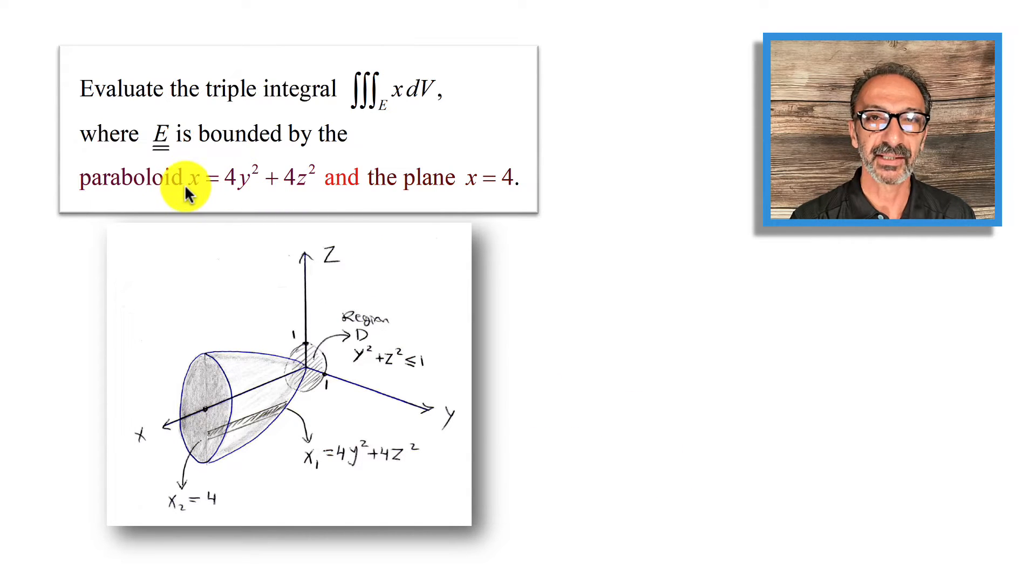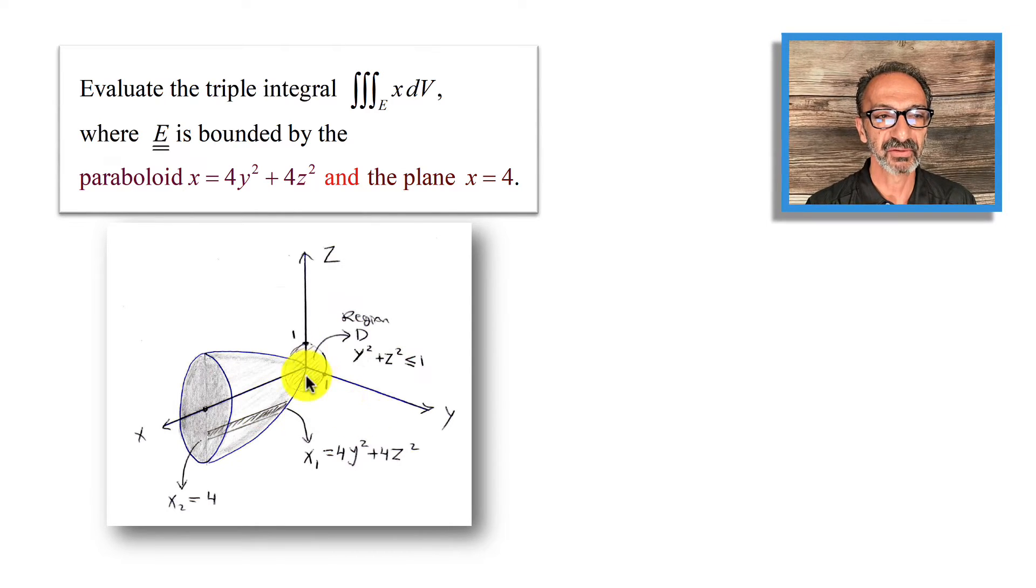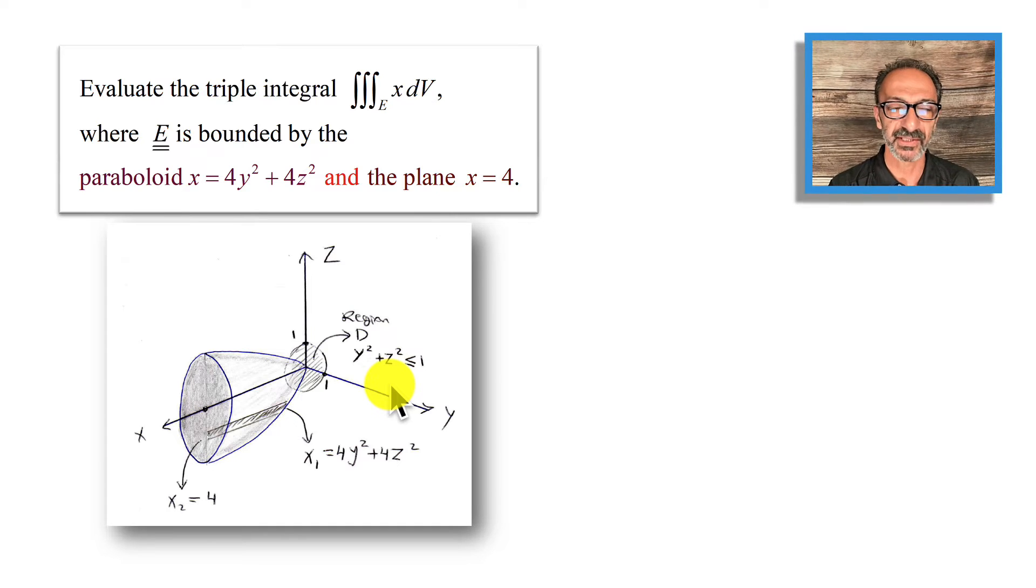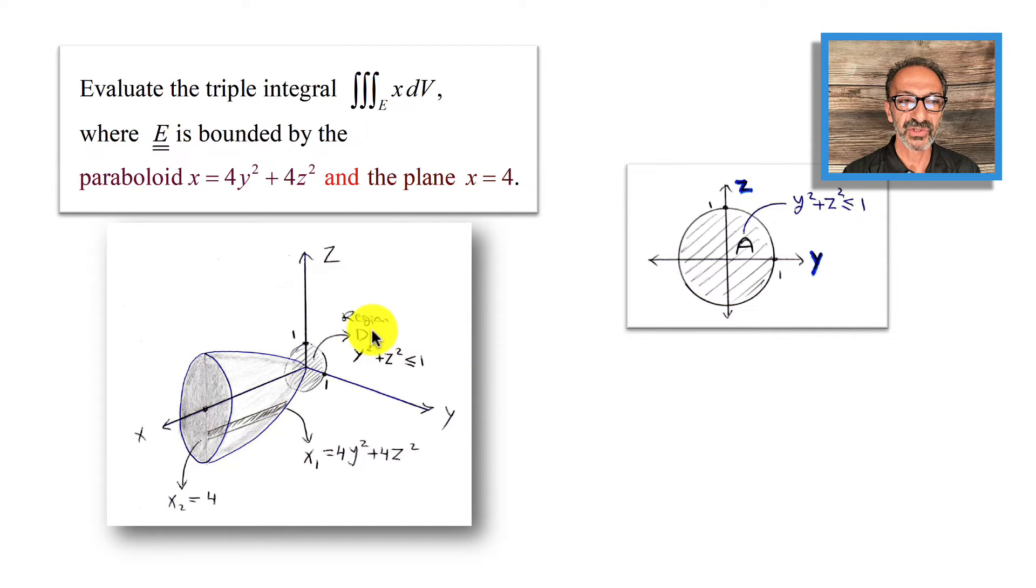The paraboloid is going to go with x, and we have the same number, 4y² and 4z², so it's going to go away from y and z with the same width or radius. It's tilted and looks like an oval from a side view. We have this region D, and the projection on the y-z plane will be y² plus z² less than or equal to 1.